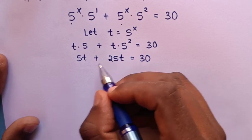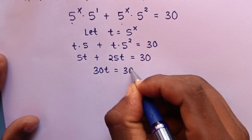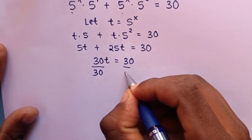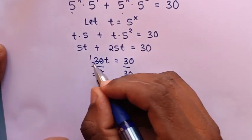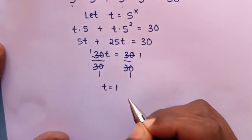5t plus 25t is 30t, which equals 30. We divide both sides by 30. After simplifying, t equals 1.